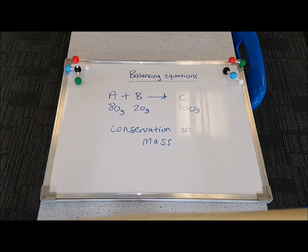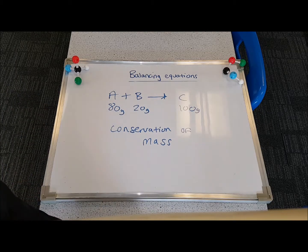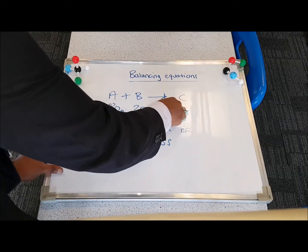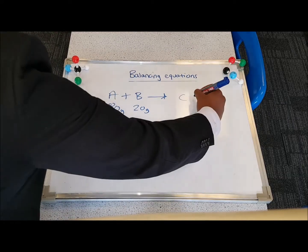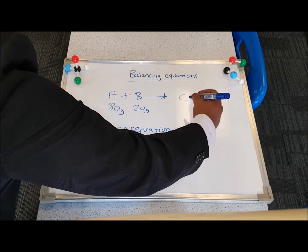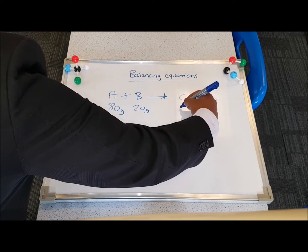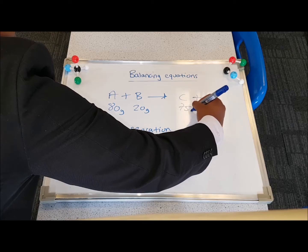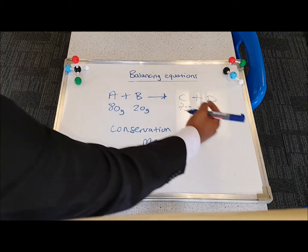If I complicate it a bit more, let's say we have a second product, D. Let's say C is 75 grams. What would be the mass of D?